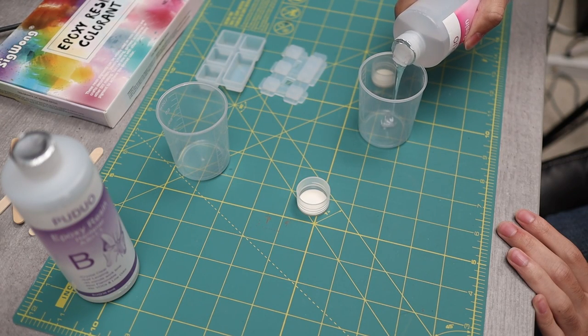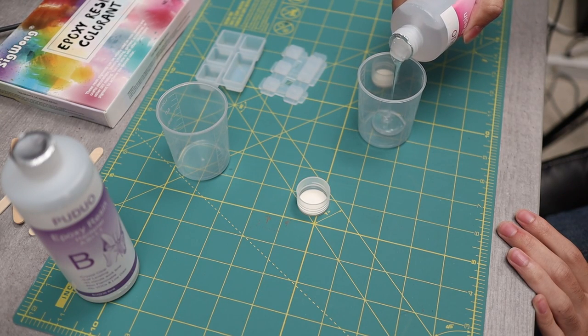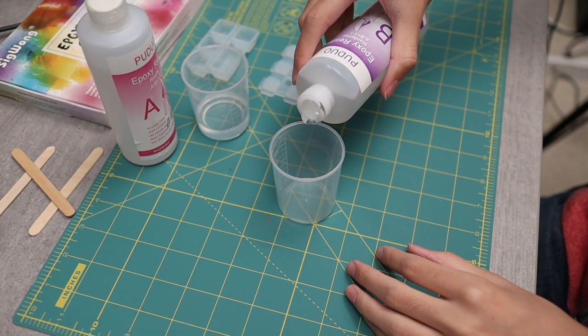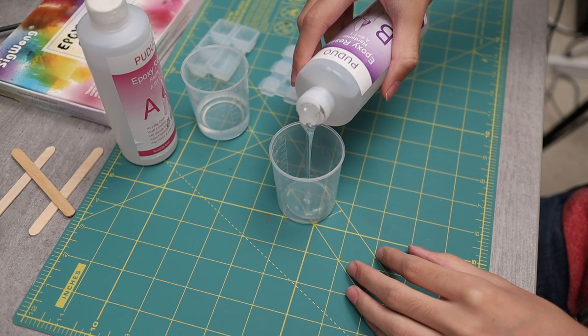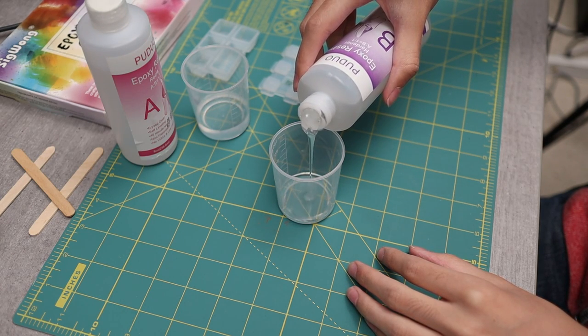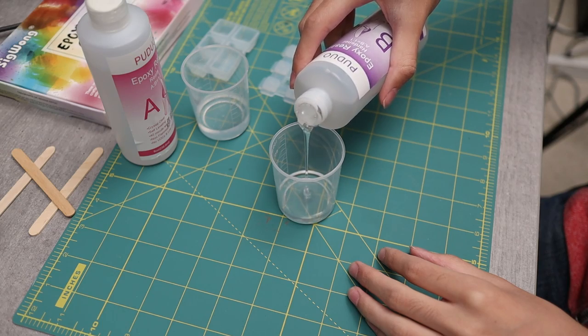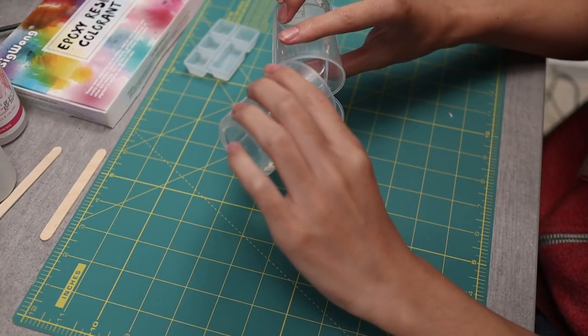Now let's get to pouring. Again, this resin takes a one-to-one ratio of parts A and B. Following the directions, it's said to pour each one out into different cups at first and then pour both contents into a mixing cup and then stir it for three to five minutes.